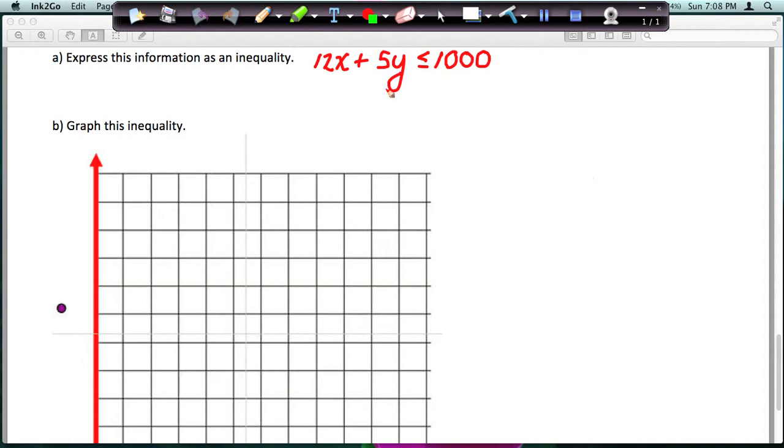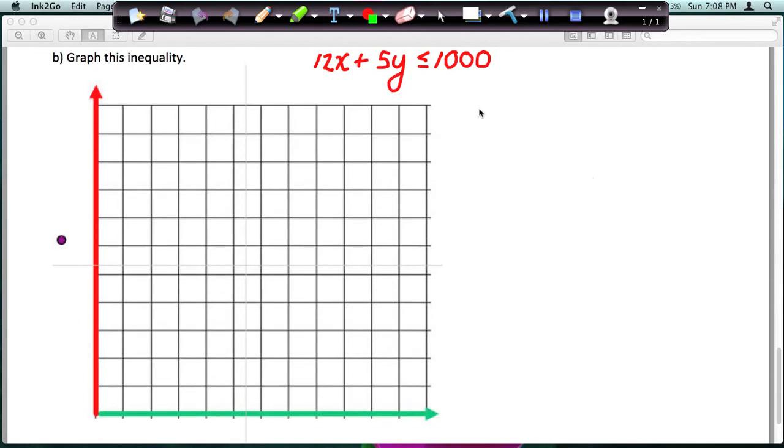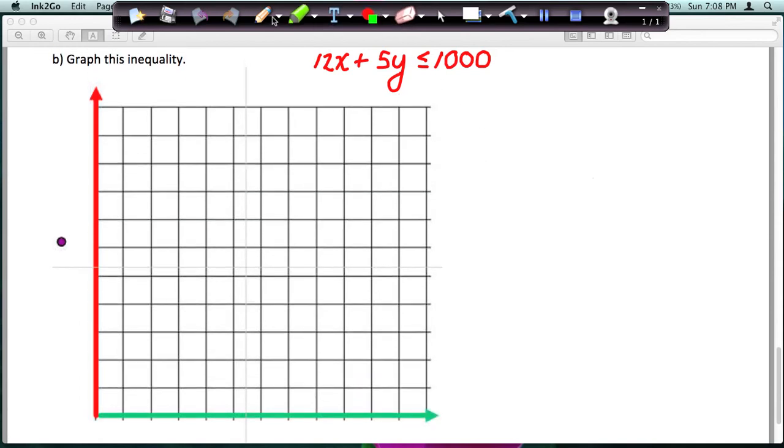Okay, so we have our inequality, and now we want to graph it. So I'm going to move this up and see the whole graph. And to graph this, the easiest way when you have an equation like this, the graph, I'm only showing the first quadrant or quadrant 1 because I'm only interested in positive numbers here. We're not going to talk about negative shares, so I only need positive X values and positive Y values.